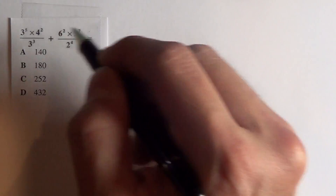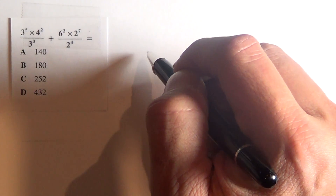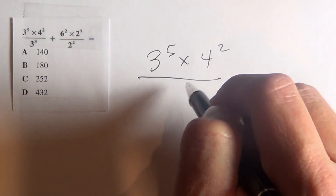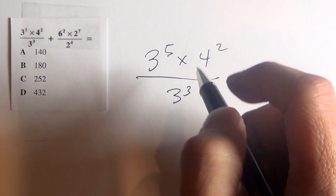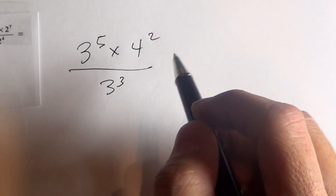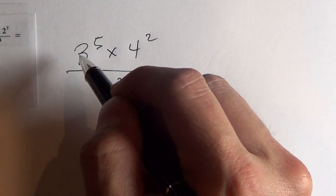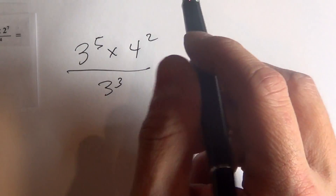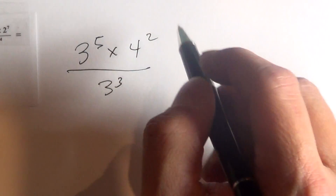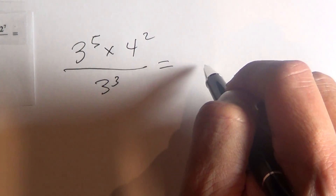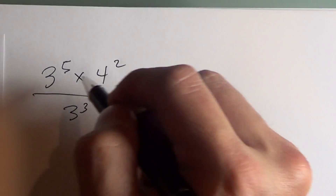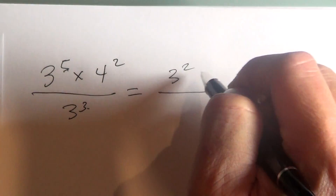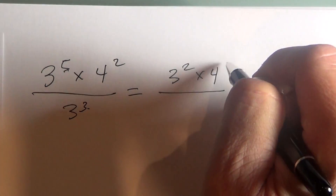Let's look at the first half: 3 to the fifth times 4 squared. So in this section right here, what you want to do is when you divide numbers with exponents, you're subtracting the exponents. So this is equal to 5 minus 3 is 2, times 4 to the second.